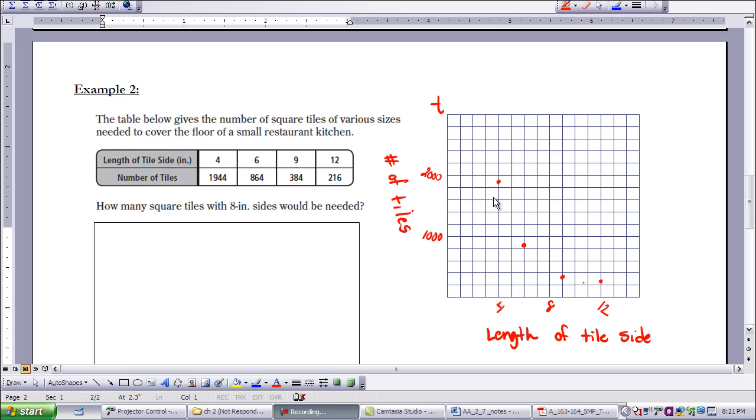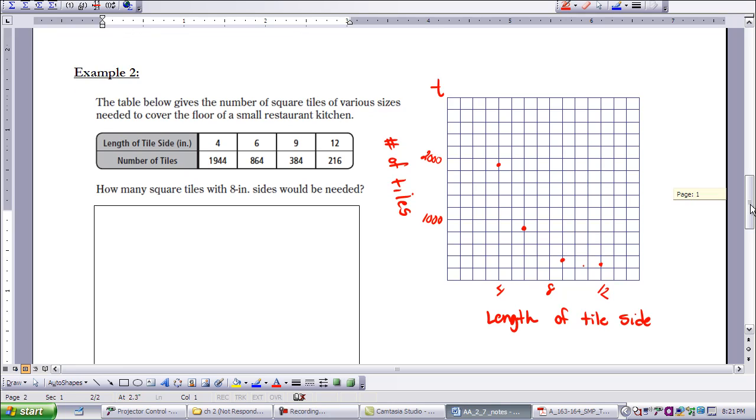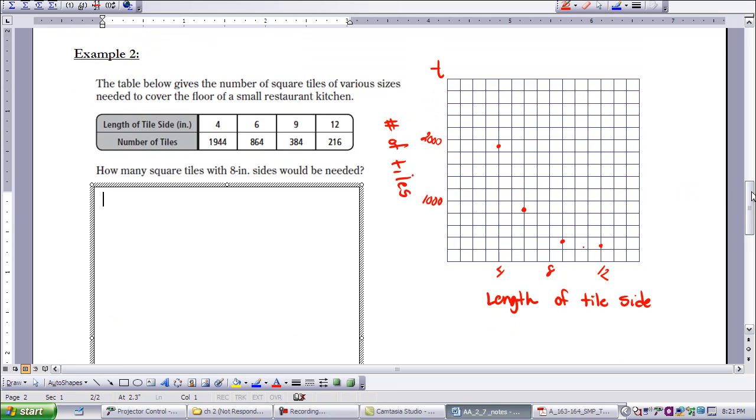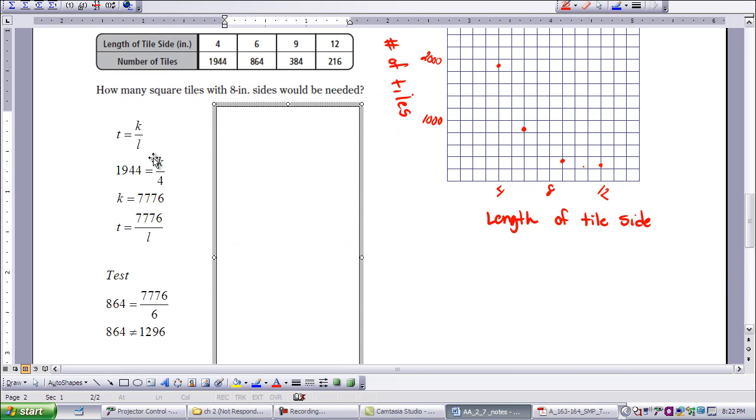So the first thing I want to do is try and see if it's going to be just a straight inverse variation. So I'm going to go about the problem as if it were an inverse variation. As you can see here, I set it up using it as if it was an inverse variation. So the number of tiles is equal to our constant over the length of the side of a tile. I take one data point and insert in my problem. I'm going to use 4 and 1944. Solve for k, and I get 7,776.